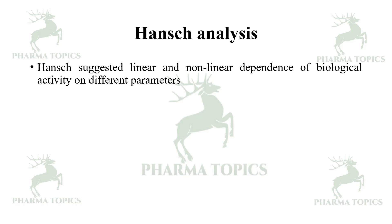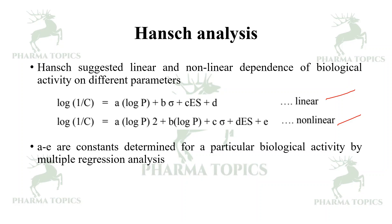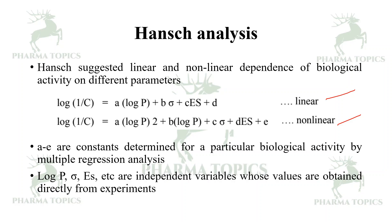Hansch analysis suggests linear and non-linear dependence of biological activity on different parameters. For a linear data set: log(1/C) = a·log P + b·(Taft constant) + c·(steric constant Es) + d. For a non-linear data set: log(1/C) = −a·(log P)² + 2b·log P + c·σ + d·Es + e. Constants a through e are determined by multiple regression analysis, while log P, σ, and Es are independent variables obtained from experiment.